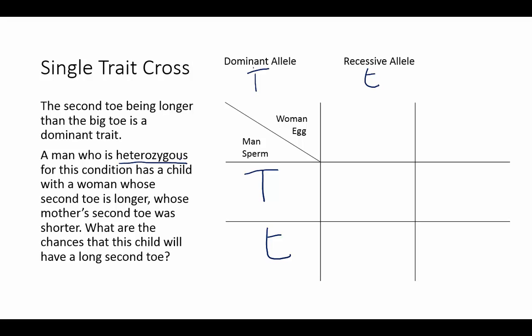The question also tells us that the woman has a longer second toe, but her mother's second toe was shorter. If her mother's second toe was shorter, it meant that she had two recessive alleles, so the only allele the mother could pass on to the woman was one recessive allele. But because the woman's second toe is longer, she also has to have a dominant allele — meaning the woman is heterozygous as well.